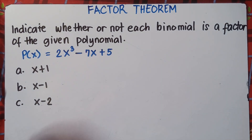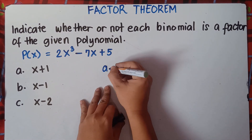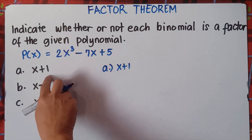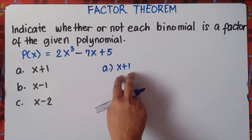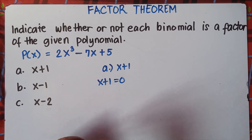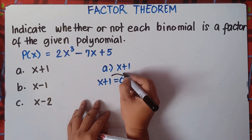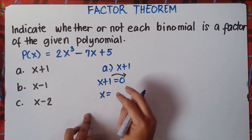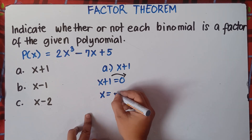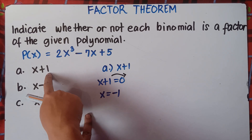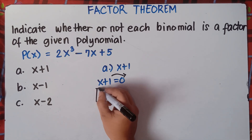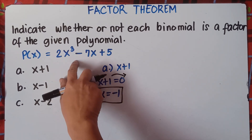Let's start with letter A. Our binomial is x plus 1. To get the value of x, you equate this binomial to 0: x plus 1 equals 0. Transpose the 1 from left to right — when you transfer a number across the equal sign, you change the sign. So x equals negative 1. For letter A, equate x plus 1 to 0, and x equals negative 1. Then substitute this x into the given polynomial.